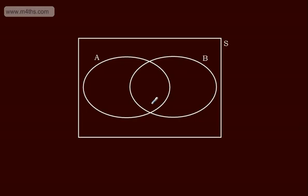We're going to be looking at shading Venn diagrams and seeing what that means in terms of the probabilities of events happening. Later in the video, we will look at something called De Morgan's theorem, which is potentially beyond the scope of S1, but interesting all the same.